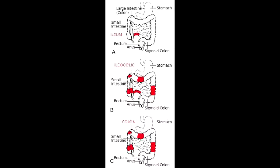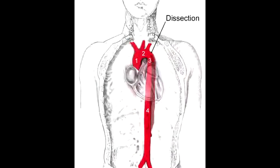What are aneurysms and dissecting of arteries commonly associated with? Aneurysms and dissecting of arteries can commonly occur due to hypertension.